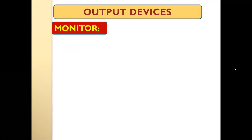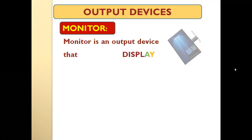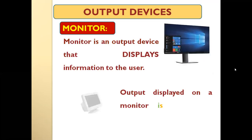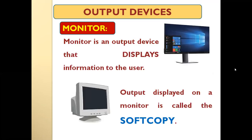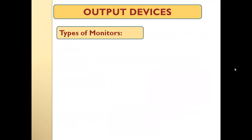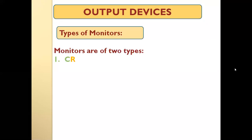The first output device we will talk about is a monitor. A monitor is an output device that displays information to the user. The output displayed on the monitor screen is called the soft copy output. We have two basic types of monitors.